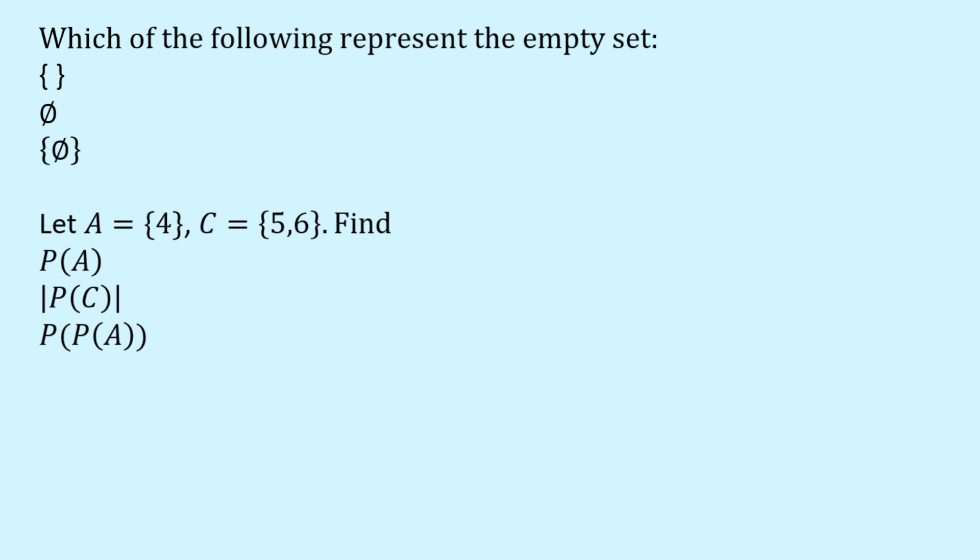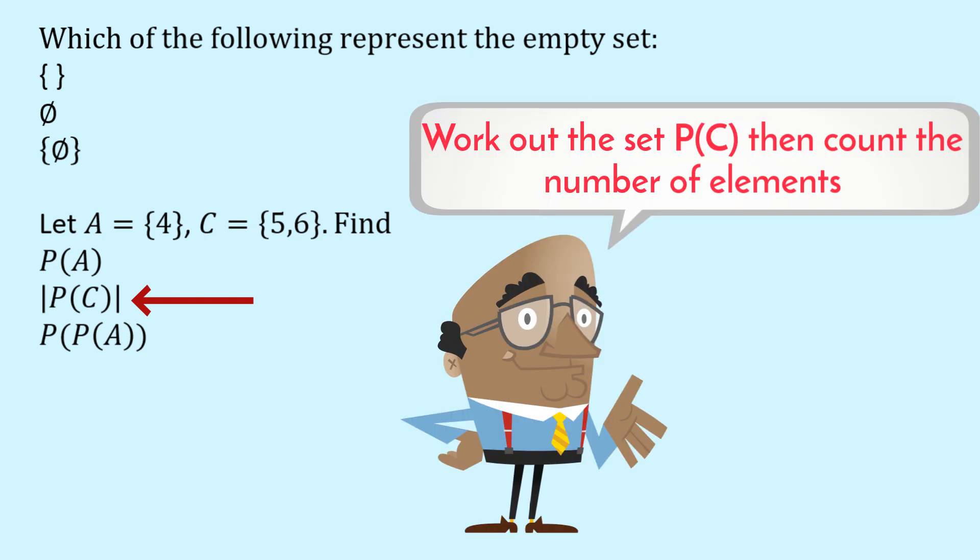Now we go on to the next one. You can see here it's the power set of C, but we've also got these straight lines around the P of C. So that is the cardinality of the power set. And cardinality here means just the number of elements in the set. So our plan is to work out the power set of C, then we'll count up the number of elements, and that will give us the cardinality of the power set of C.